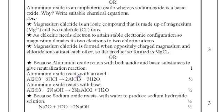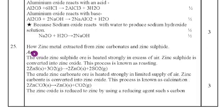Next, 25th question. How zinc metal extracted from zinc carbonate and zinc sulfide? The crude zinc sulfide ore is heated strongly in excess of air. Zinc sulfide is converted into zinc oxide. This process only we called as roasting. I have given the equation. The crude zinc carbonate ore is heated strongly in limited supply of air. Zinc carbonate is converted into zinc oxide. This process is known as calcination. The zinc oxide is reduced due to zinc by using the reducing agent such as carbon.